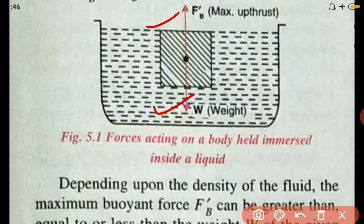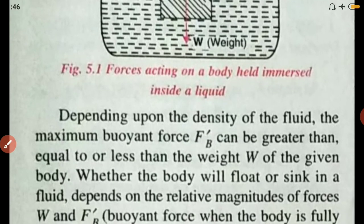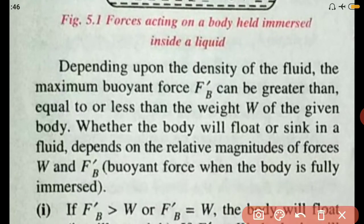Depending upon the density of the fluid, the maximum buoyant force can be greater than, equal to, or less than the weight of the given body. Whether the body will float or sink in a fluid depends on the relative magnitudes of forces W and FB dash — that is, the weight of the object and the maximum buoyant force when the body is fully immersed.